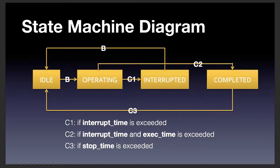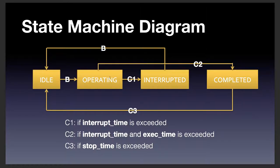If the interrupt time reaches its predefined value, the state is declared as interrupted. This is displayed on the website, and the system tells the user to come and check their clothes. The user goes there, pushes a button, and the state changes back to idle. If the operating state is not interrupted, it means the operation completed correctly.